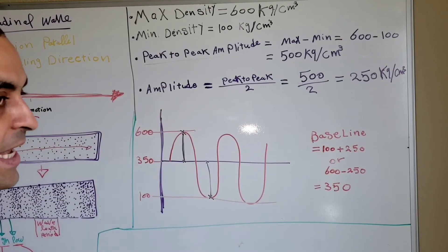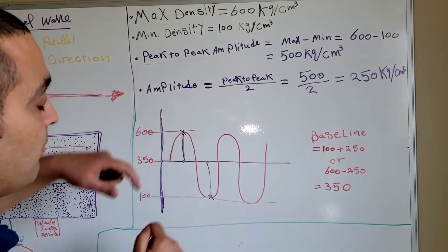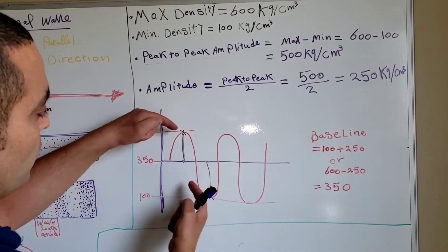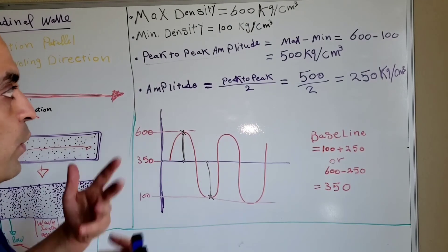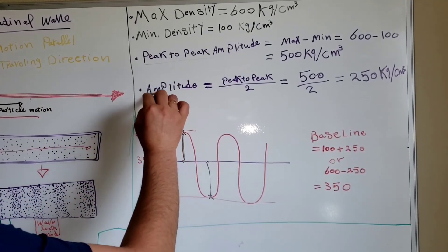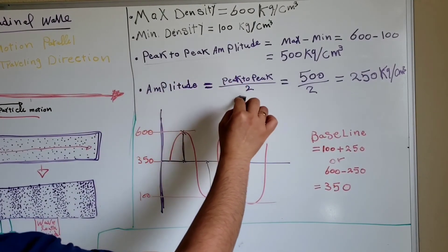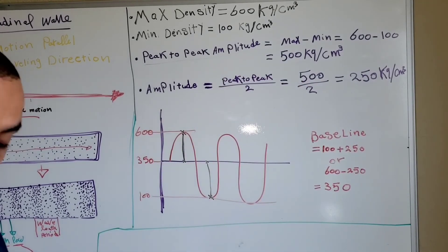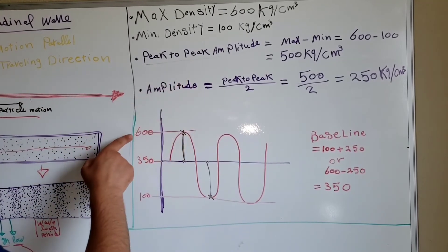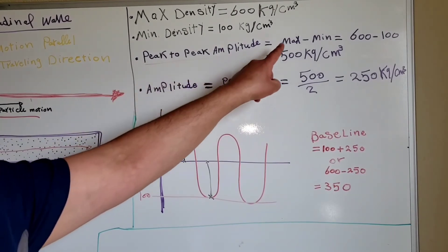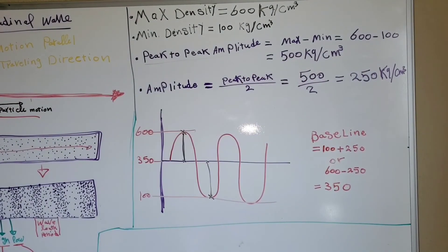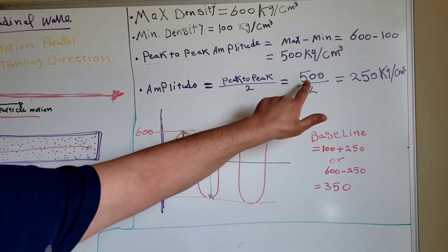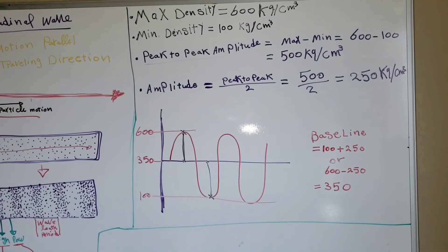The peak-to-peak amplitude equals double the amplitude, because there is one amplitude above the baseline and one amplitude below. So two amplitudes equal the peak-to-peak amplitude. We calculate the peak-to-peak first: maximum minus minimum = 600 minus 100 = 500 kg per cubic centimeter. Then the amplitude equals peak-to-peak divided by 2, which equals 500 divided by 2 = 250 kg per cubic centimeter.